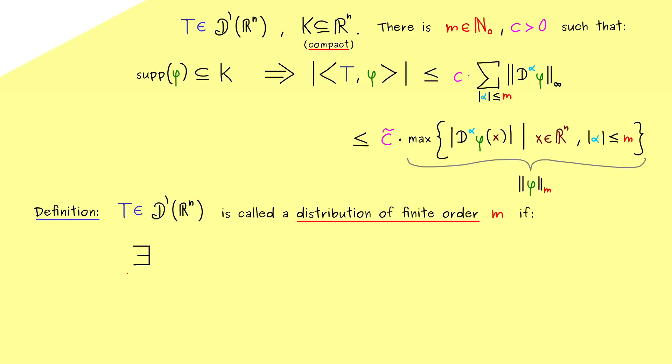So we write, there exists a non-negative integer m, such that for all compact sets in R^n, we find a positive constant, we now call c again, such that for all test functions φ we have the estimate from before. And now we can write it in a short way.